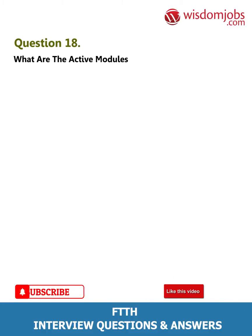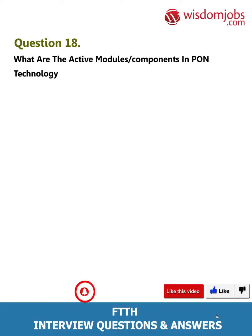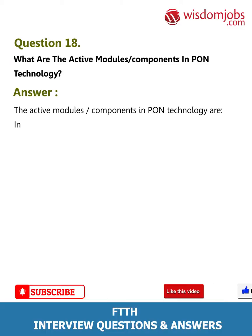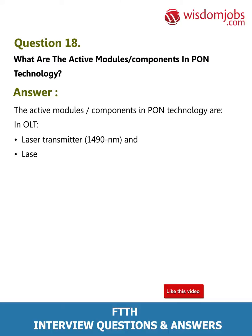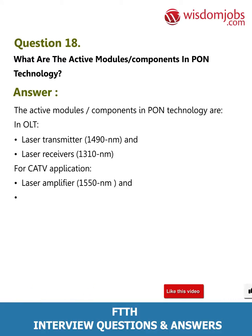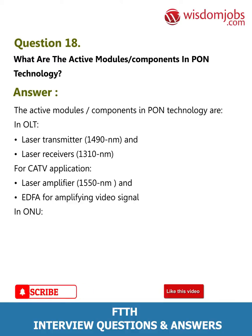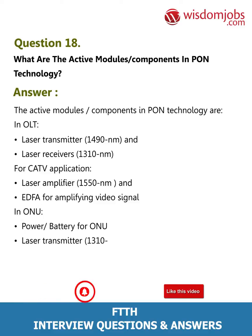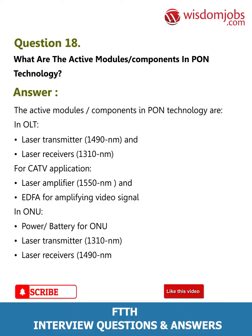Question 18: What are the active modules/components in PON technology? Answer: The active modules and components in PON technology include: in OLT — laser transmitter 1490 nm, laser receivers 1310 nm; for CATV application — laser amplifier 1550 nm and EDFA for amplifying video signal. In ONU — power/battery.